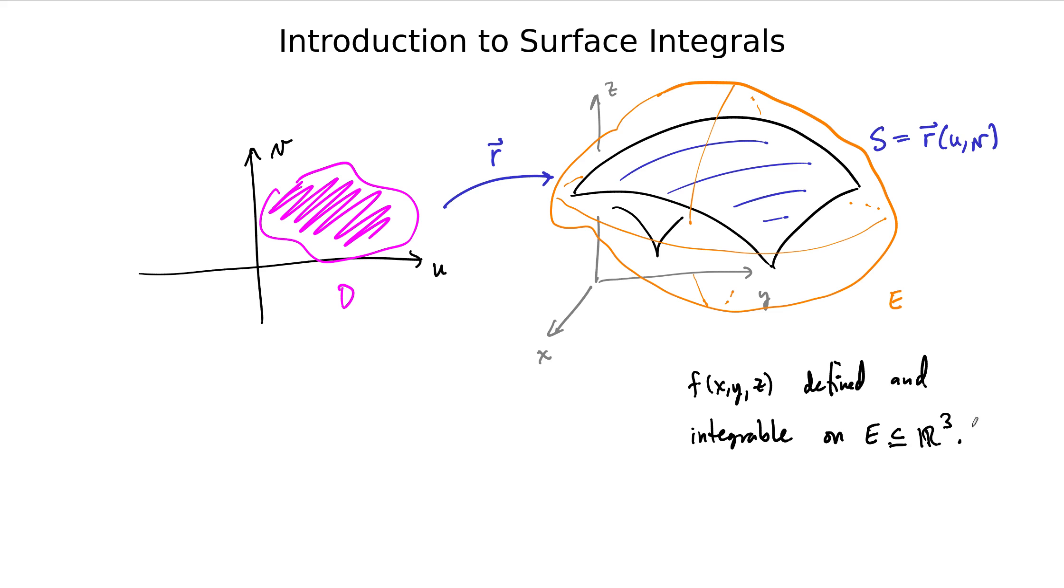So what we would like to do is try to integrate this function along the surface. Okay, along the surface. And the way that we do that is we just restrict the function to S. Okay, we restrict the function f to S. And then we try to add up just like we normally would, right?